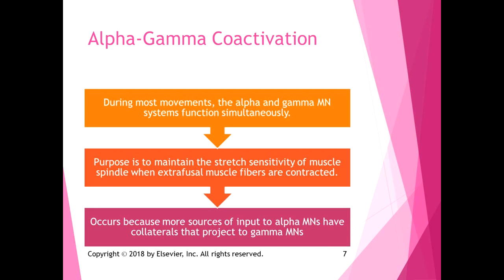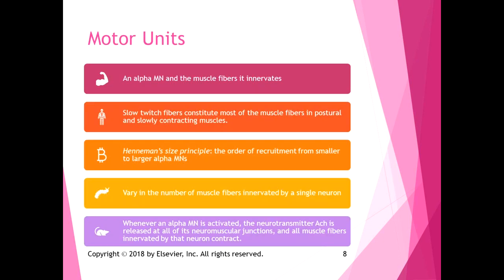Alpha-gamma coactivation occurs because most sources of input to alpha motor neurons have collaterals that project to gamma motor neurons as well. Alpha motor neurons can have an excitatory effect on gamma motor neurons, so the whole muscle contracts simultaneously while maintaining stretch sensitivity. A motor unit is defined as the alpha motor neuron and all the muscle fibers it innervates.